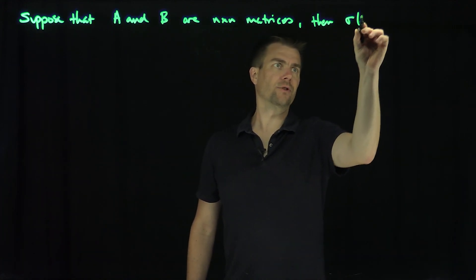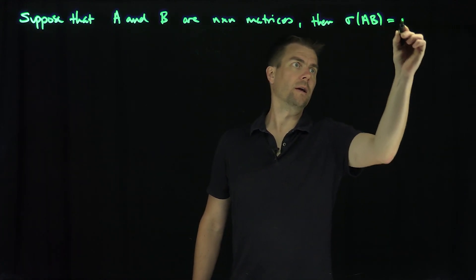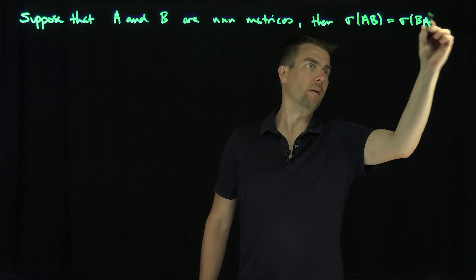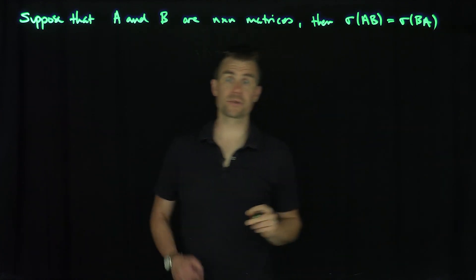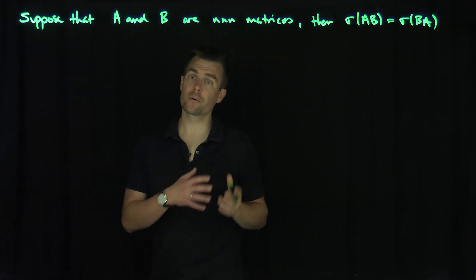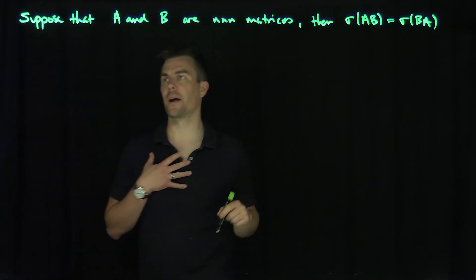Then the spectrum of AB is the spectrum of BA. In other words, the eigenvalues of A times B are equal to the eigenvalues of B times A.